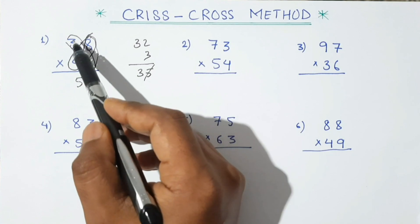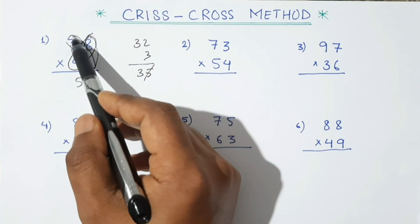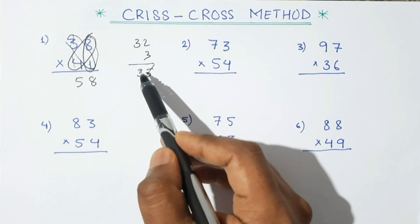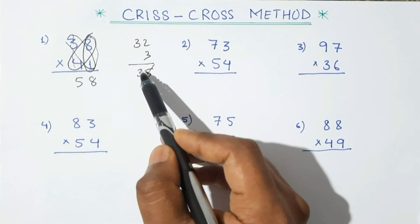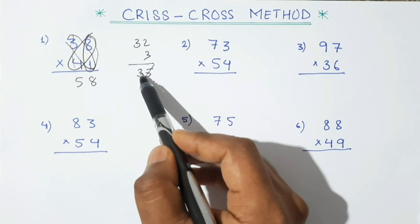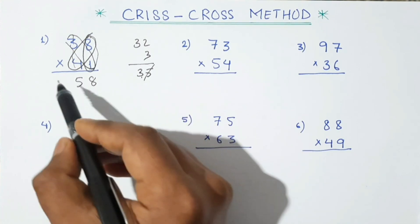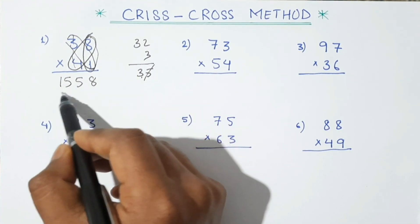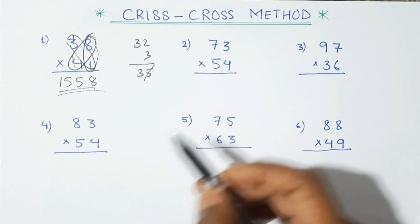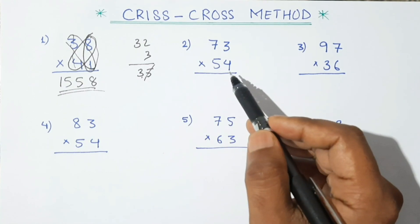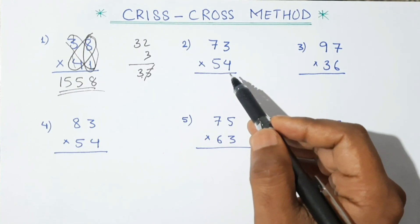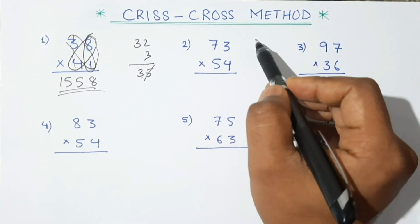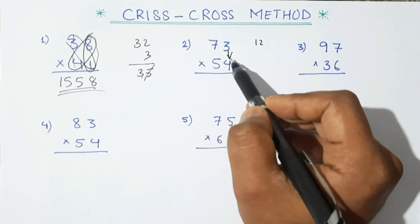Now multiply 3 and 4: 3×4 is 12. Adding the carry: 12+3 is 15. So our answer is 1558. Similarly, let's do another question.